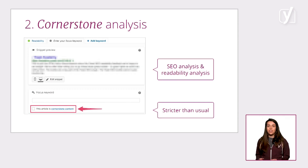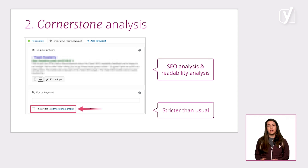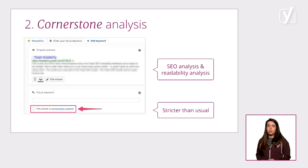Second, the cornerstone analysis. In the Yoast SEO plugin, you can mark your content as cornerstone content. As a result, both the SEO analysis and the readability analysis will be stricter than usual. Why? Because cornerstone content should be longer and even better than your other articles — the demands on your writing should be higher.